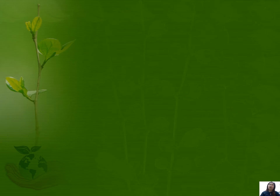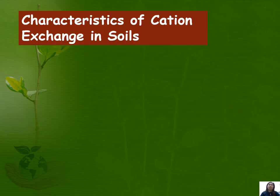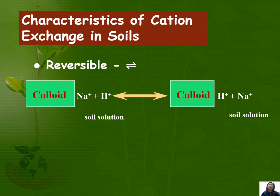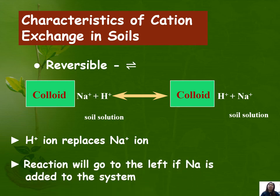Now we move on to the characteristics of cation exchange in soils. The first characteristic is that it is reversible. For example, you have a sodium ion adsorbed on the soil colloid and a hydrogen ion present in the soil solution. The exchange can happen to the right, where hydrogen ions attach to the colloid and sodium enters the soil solution. This process is reversible — it can happen to the right or to the left. The hydrogen ion replaces the sodium ion, and the reaction goes to the left if sodium is added to the system.